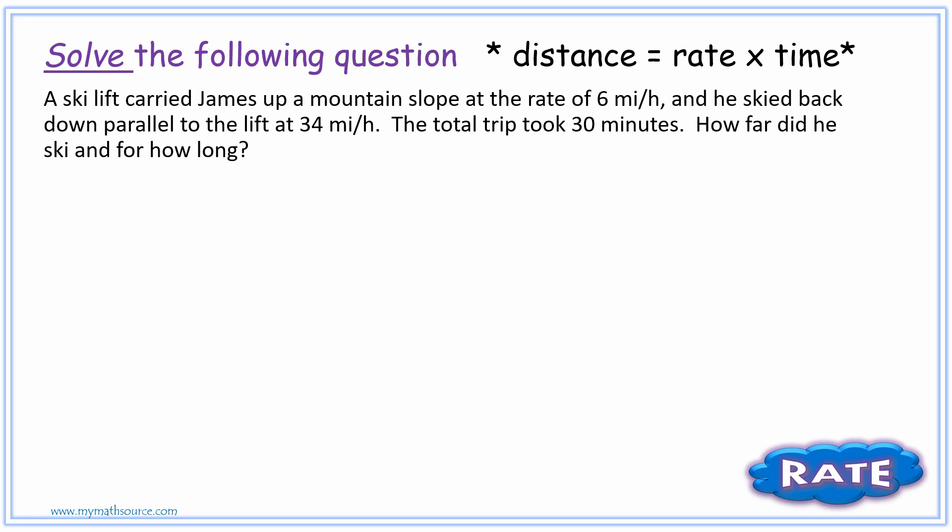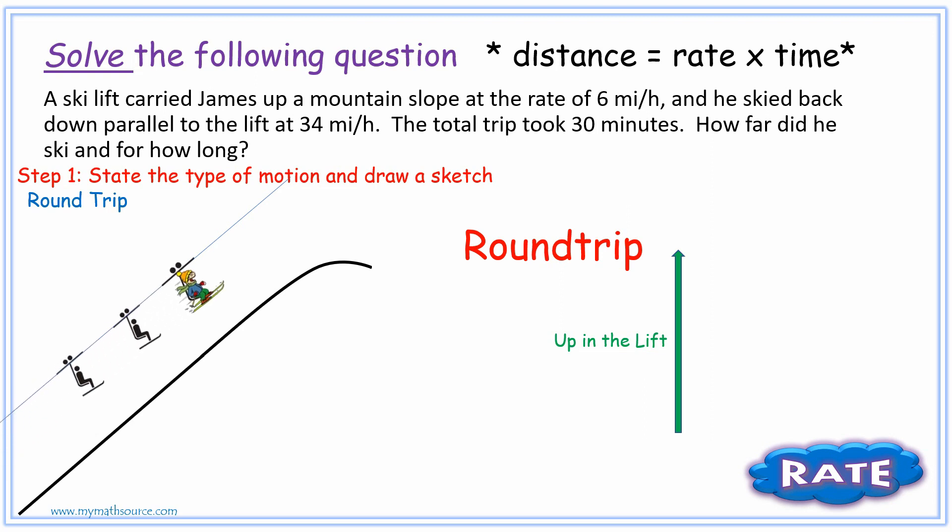Two things that we're looking for, but what we want to definitely pull out is that we want to state the type of motion and draw a sketch. I've made a little bit more animated, but this animation can greatly assist us. It's a round trip because he's going up the lift, as seen in the animation. And then as he gets to the top of the mountain, he's going to ski right back down, skiing downhill the same distance.